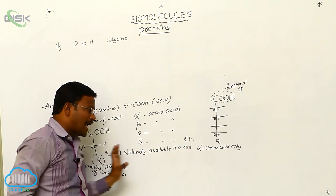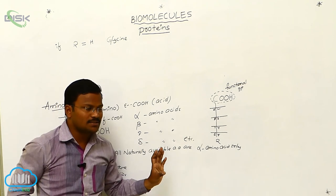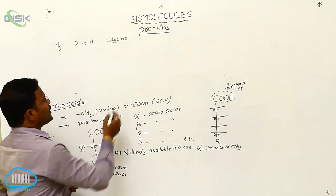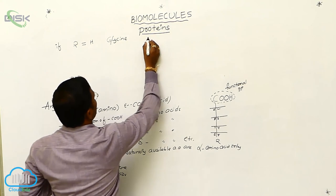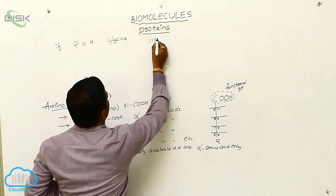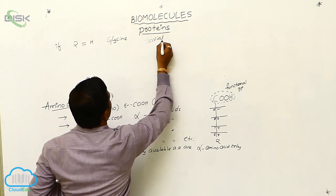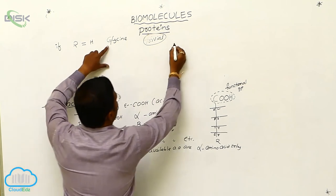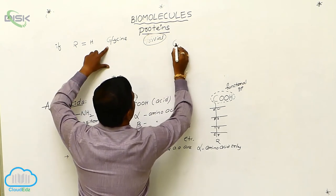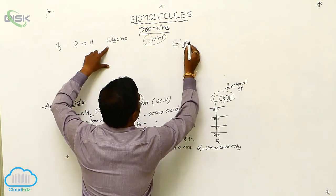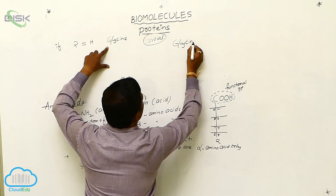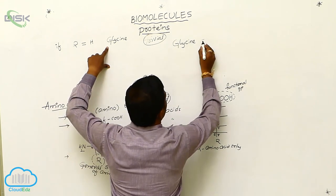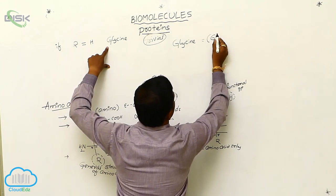Not only glycine — all naturally available amino acids are named based on their tribal character. The word 'glycine' is derived from the Greek word 'glycos'.